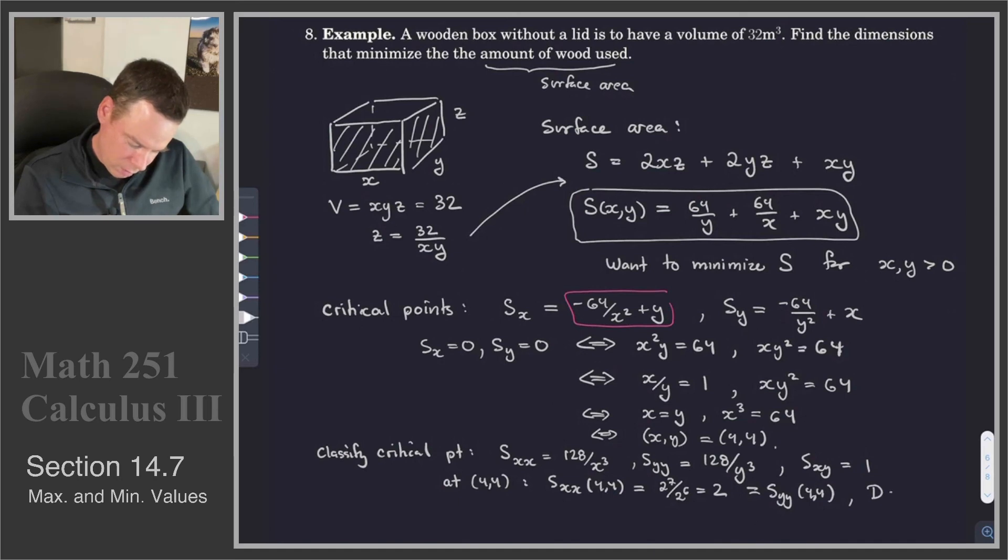So that means, what is our discriminant, our D value? Our D value would be Sxx times Syy minus Sxy squared, which is equal to 4 minus 1 or 3, which is positive. So I have that Sxx is positive. So therefore, since D is positive and Sxx is positive, that means S has a minimum at 4, 4.